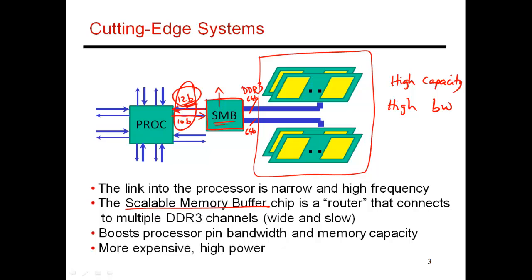Ultimately, this SMB chip has a pretty high power overhead because it's running at an extremely high frequency. So those are the main penalties of having to go with an architecture like this.